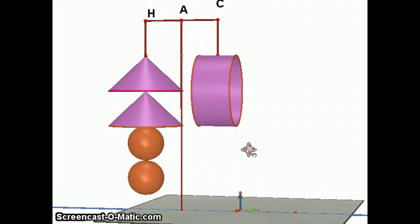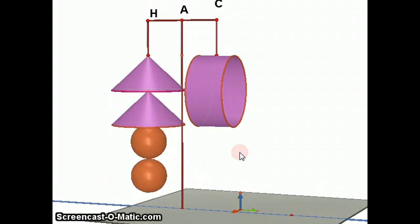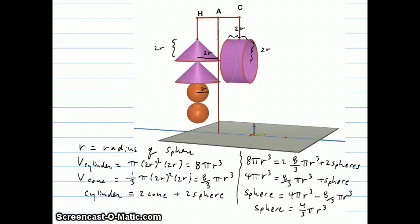But here's a nice 3D rendering of what his goal is. And he's going to do this with geometry. So he's going to prove that the cylinder would balance out these two cones and these two spheres. I'm going to show you how he establishes this balance later.